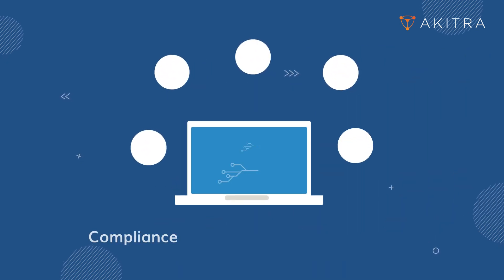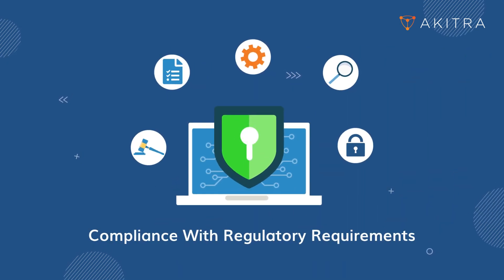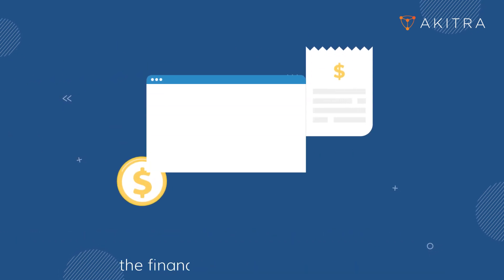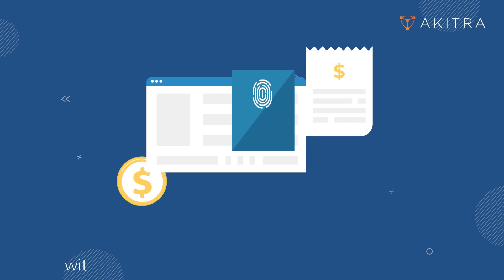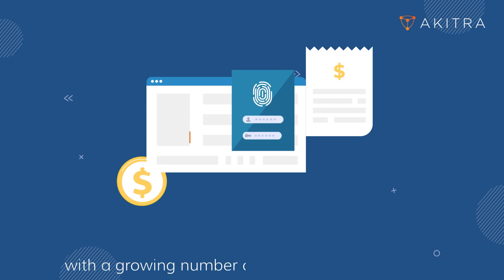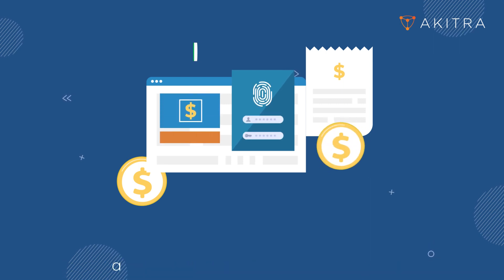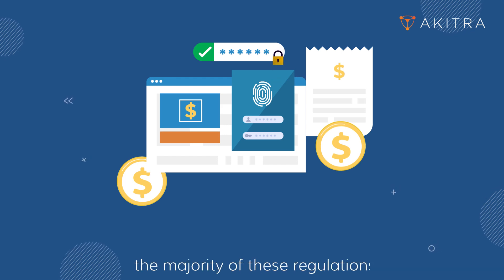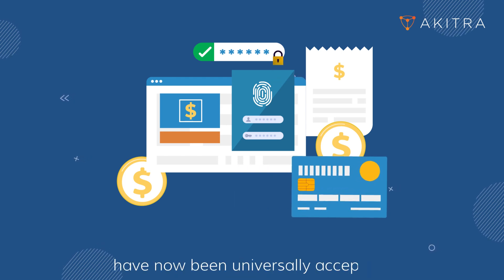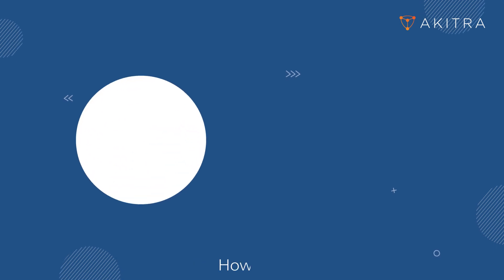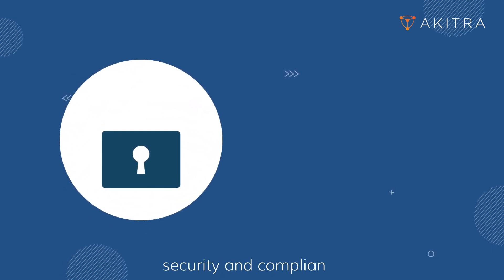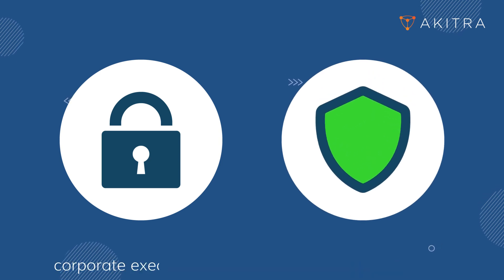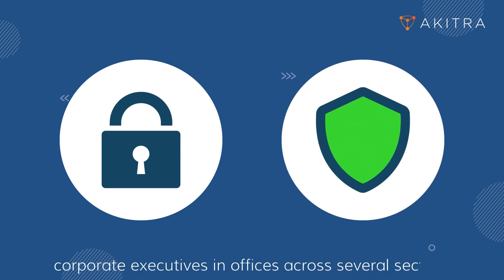Second, compliance with regulatory requirements. Early in the 21st century, the financial industry had to comply with a growing number of regulatory requirements addressing security and access rights. The majority of these regulations have now been universally accepted. However, security and compliance are now top priorities for the majority of corporate executives in offices across several sectors.